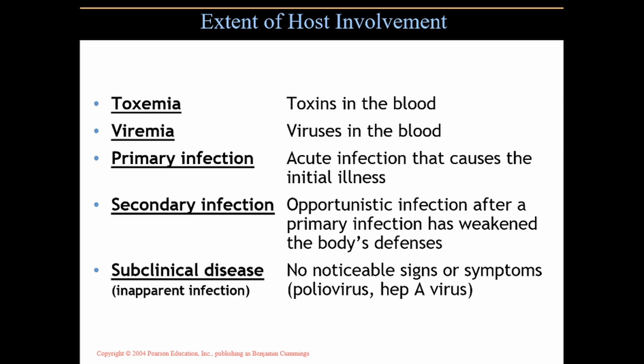A primary infection is the acute infection that caused the initial illness, but then you can develop a secondary infection because the immune system has been weakened and pathogens take the opportunity to create a new infection. For example, AIDS being the primary infection, tuberculosis then follows as a secondary — or opportunistic — infection because the body's defenses are obviously weakened.